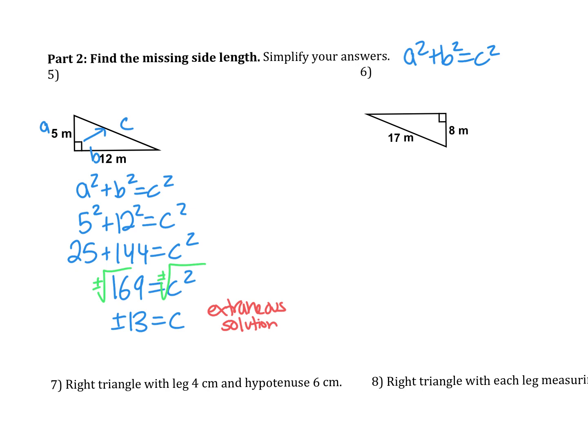So in this case, we know that we cannot have a negative side length of a triangle and therefore our only solution here is 13 meters. I can write that here and I could label it up on my triangle.